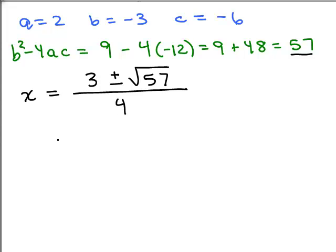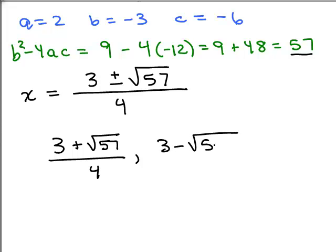And so I have two solutions: 3 plus the square root of 57 over 4, and 3 minus the square root of 57 over 4.